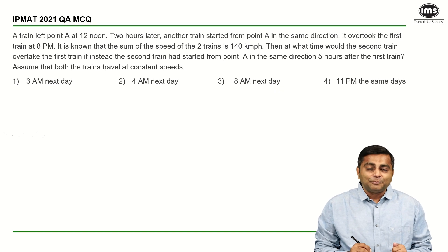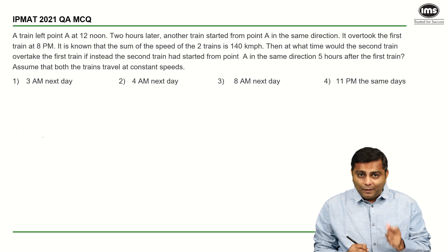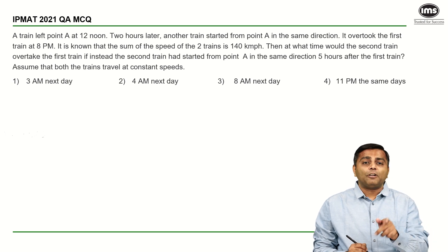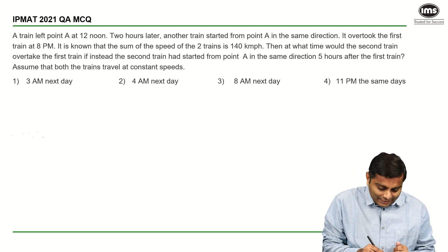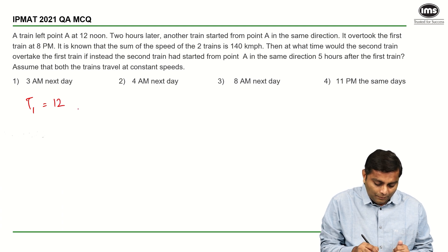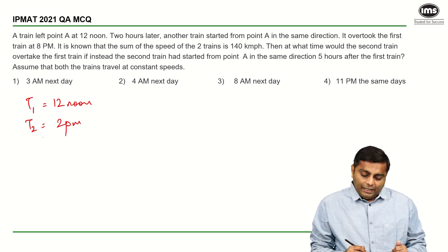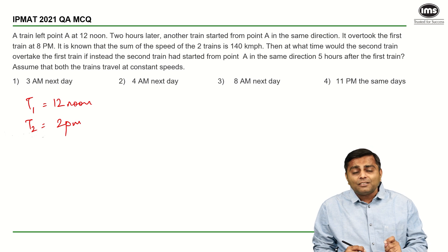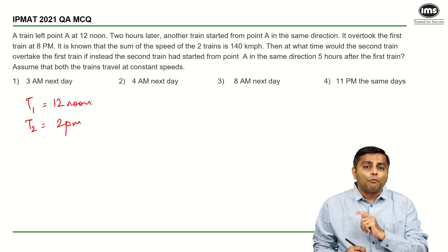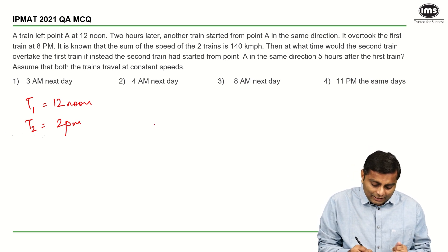Starting with the solution, you know that the first train left at 12 and the second train left at 2 PM. So, let us say T1 left at 12 noon and T2 left at 2 PM. It overtook the first train at 8 PM, which means train 2 travelled for 6 hours.